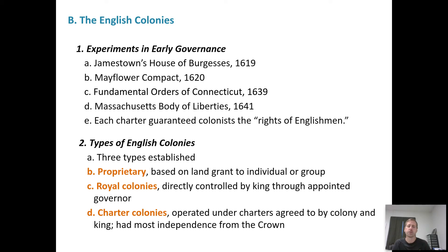The Fundamental Orders of Connecticut specifically listed things the government could not do — the idea of limited government. Today we may not think much of it, but these were new things being done for the very first time, and so they are important. There are also three different types of colonies: proprietary, royal, and charter colonies.